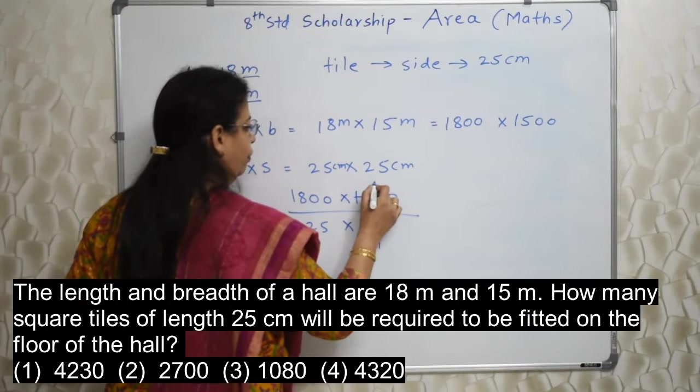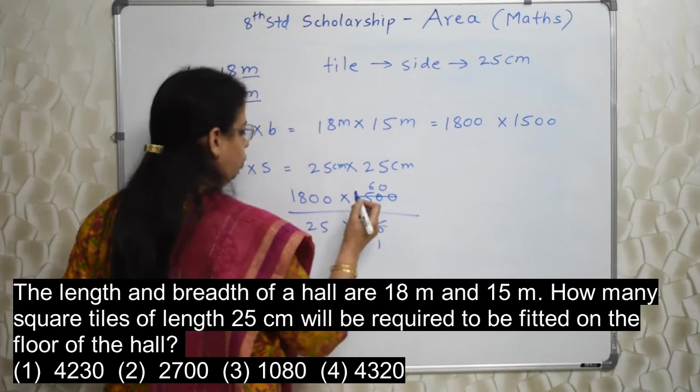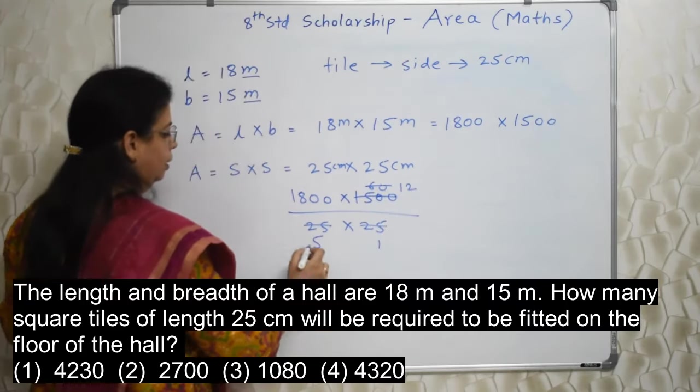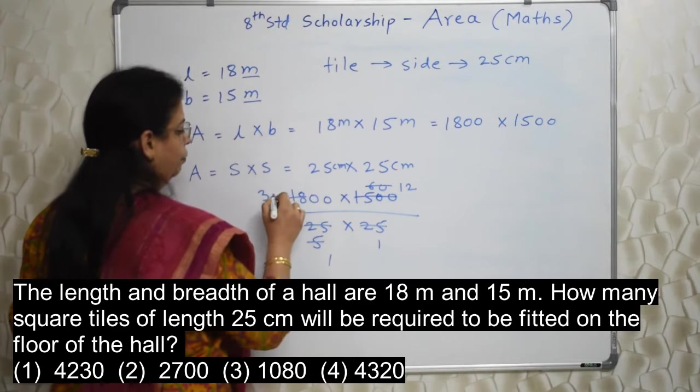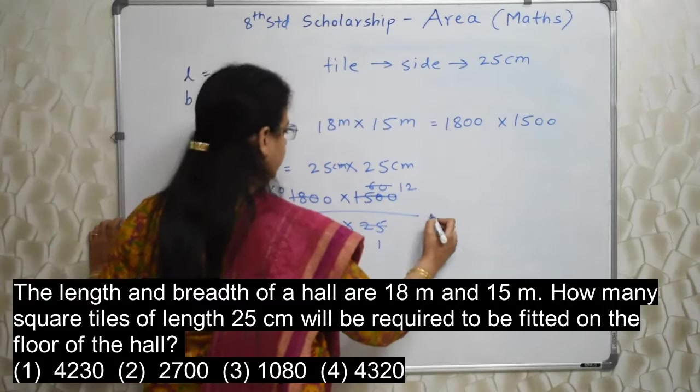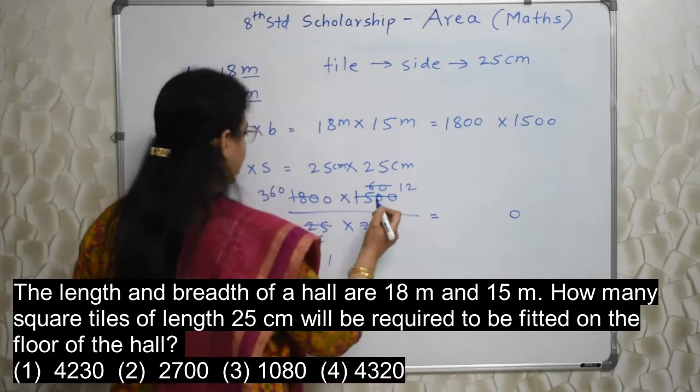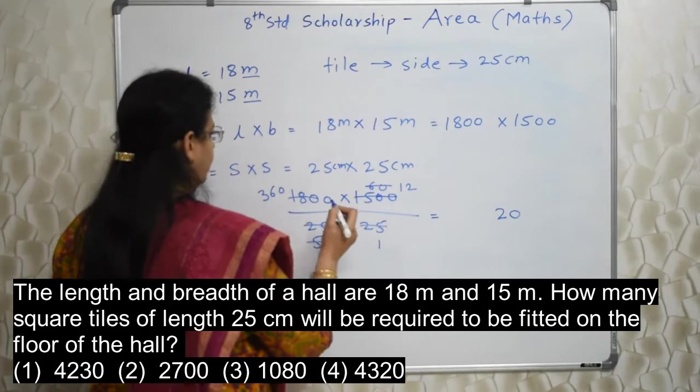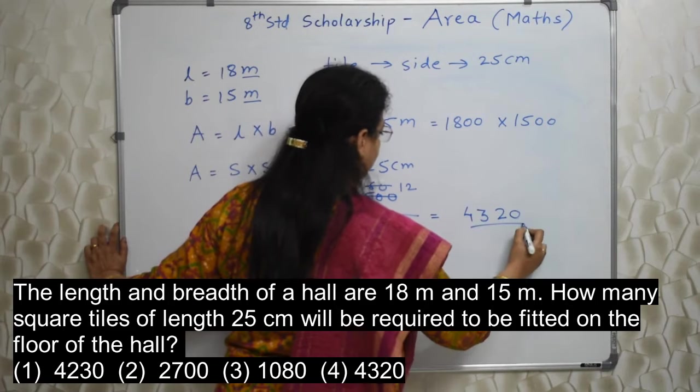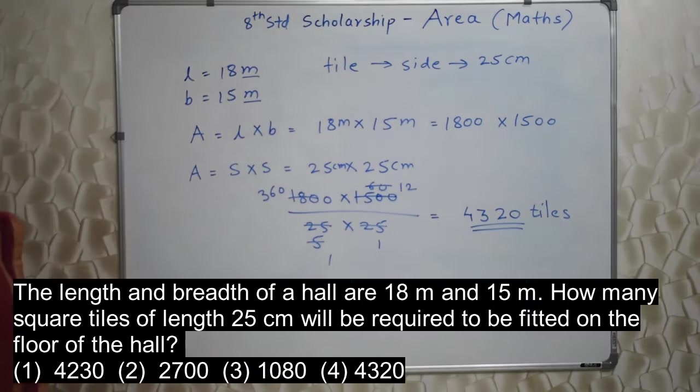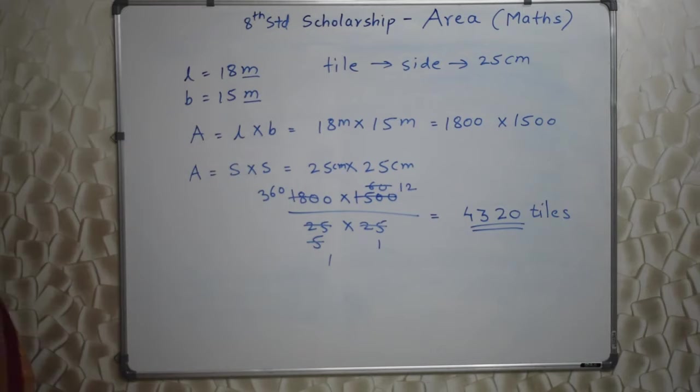We can go ahead with the division. 25 ones are, 25 six are. 150 and this one 0. Then five fives are, 12s are. Then five ones are, five threes are 15, five sixes are 30, and this 0. Then 12 into 360. 12 zeros are 0, 12 six are 72, 12 threes are 36 plus 7, so 43. So 4,320 tiles are required to cover that entire area of rectangular hall.